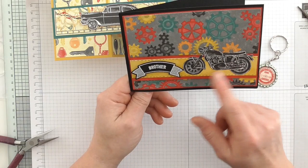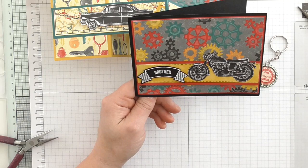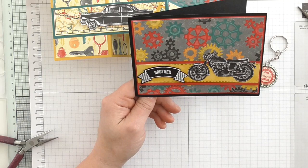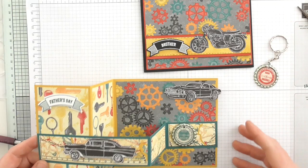Here is the other card that I made. Again, I just used the DSP. I fussy cut one of the motorbikes and used the paper with the cogs. I've used the Thoughtful Banners on black cardstock and I've heat embossed with white embossing ink. There we go, that is my male theme card commitment for the whole entire Stampin' Up year, because I don't make male theme cards very often.